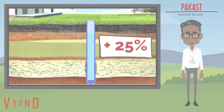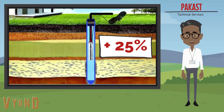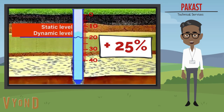Everything is very simple. We fill the borehole to the top with water and quickly put a sealed borehole head. This action effectively removes atmospheric pressure from the borehole.